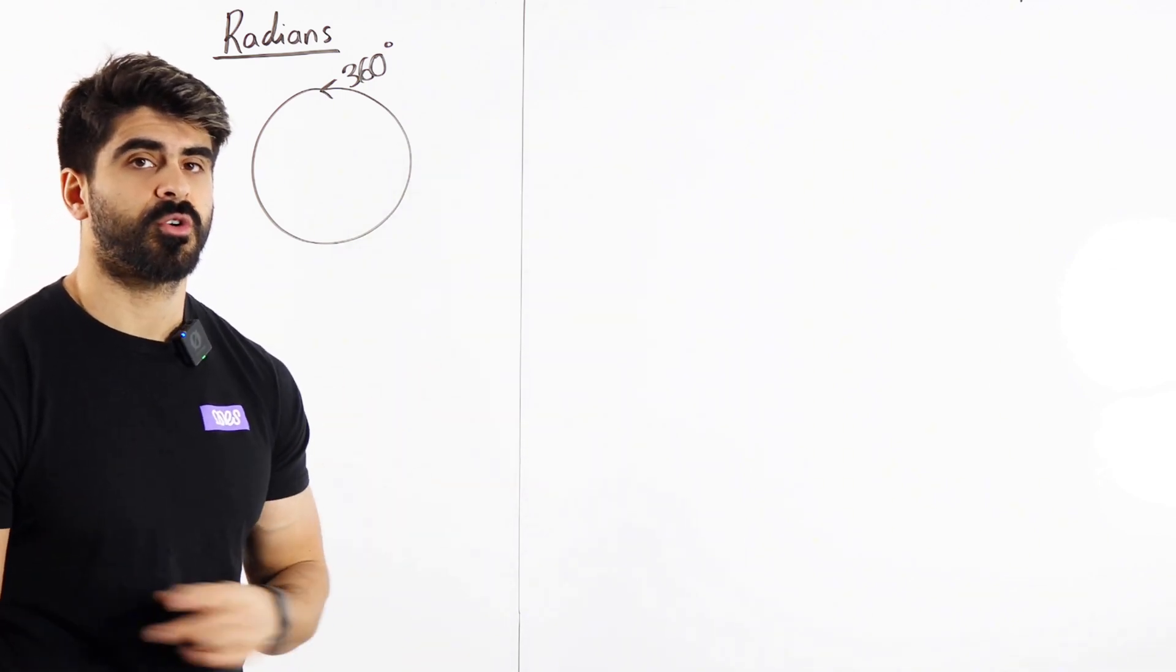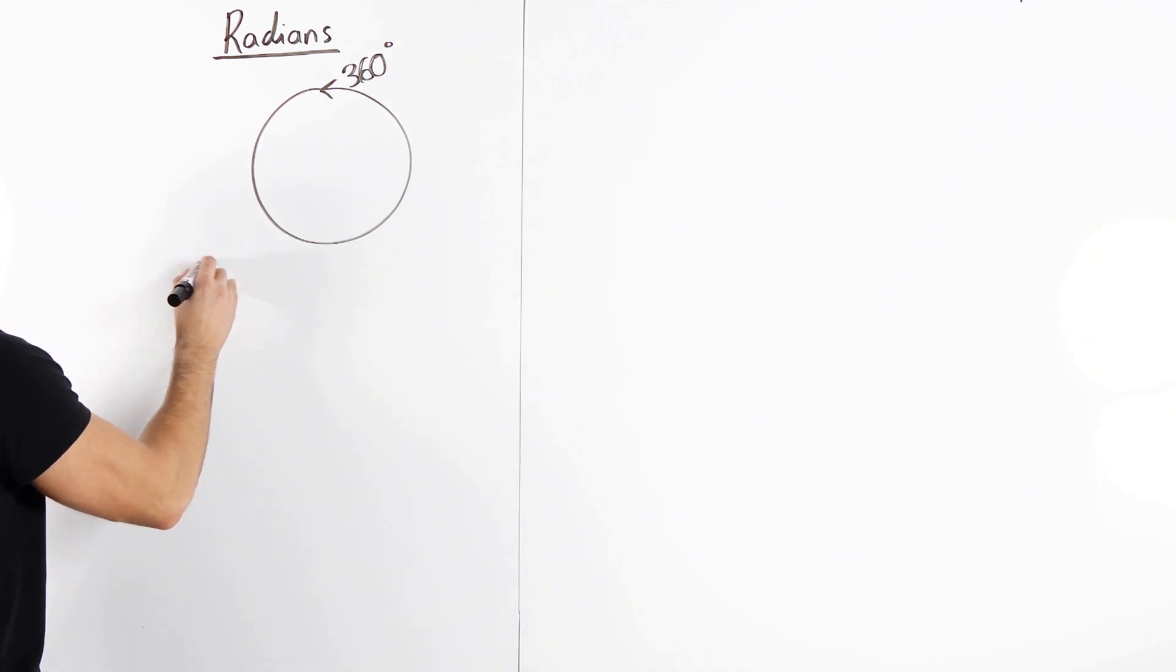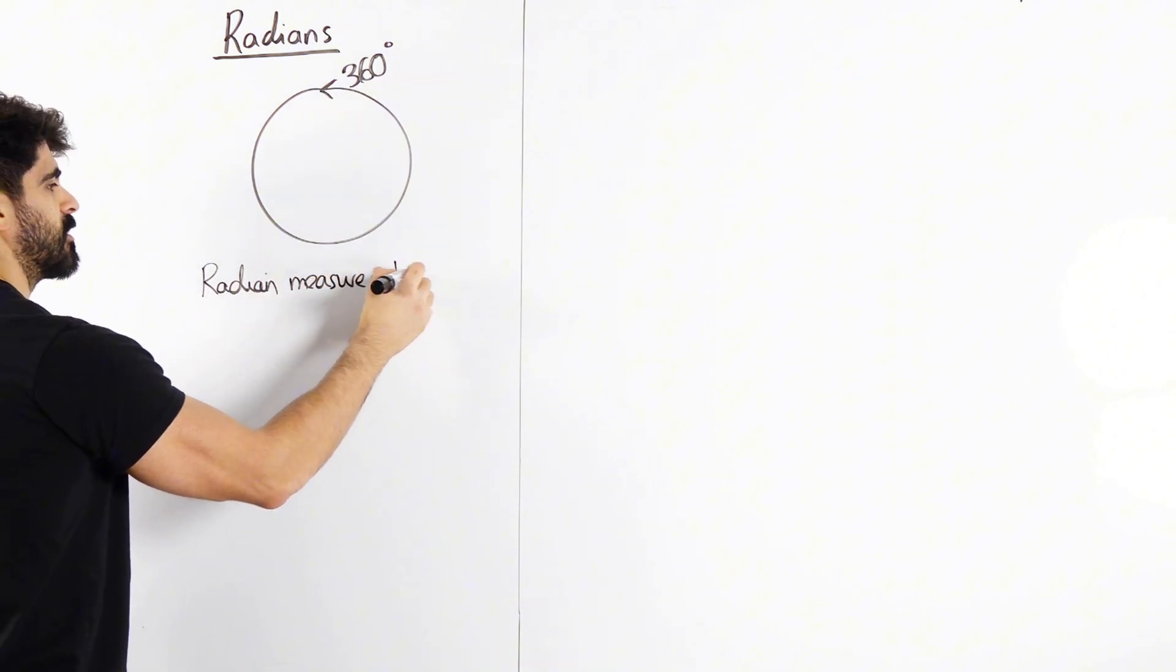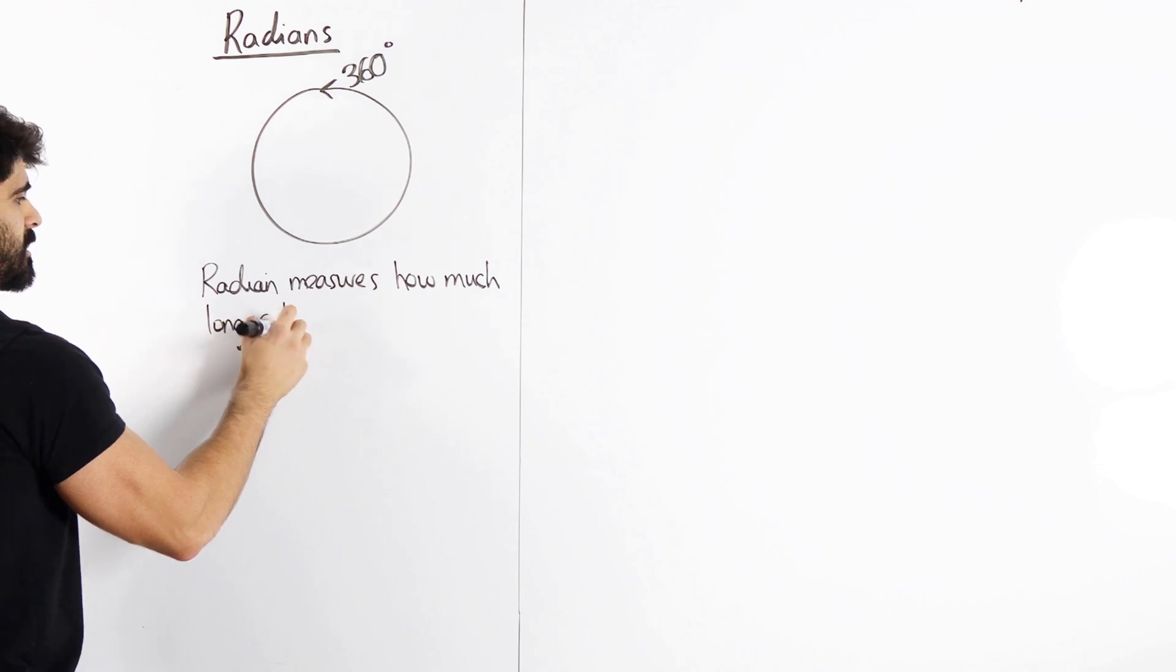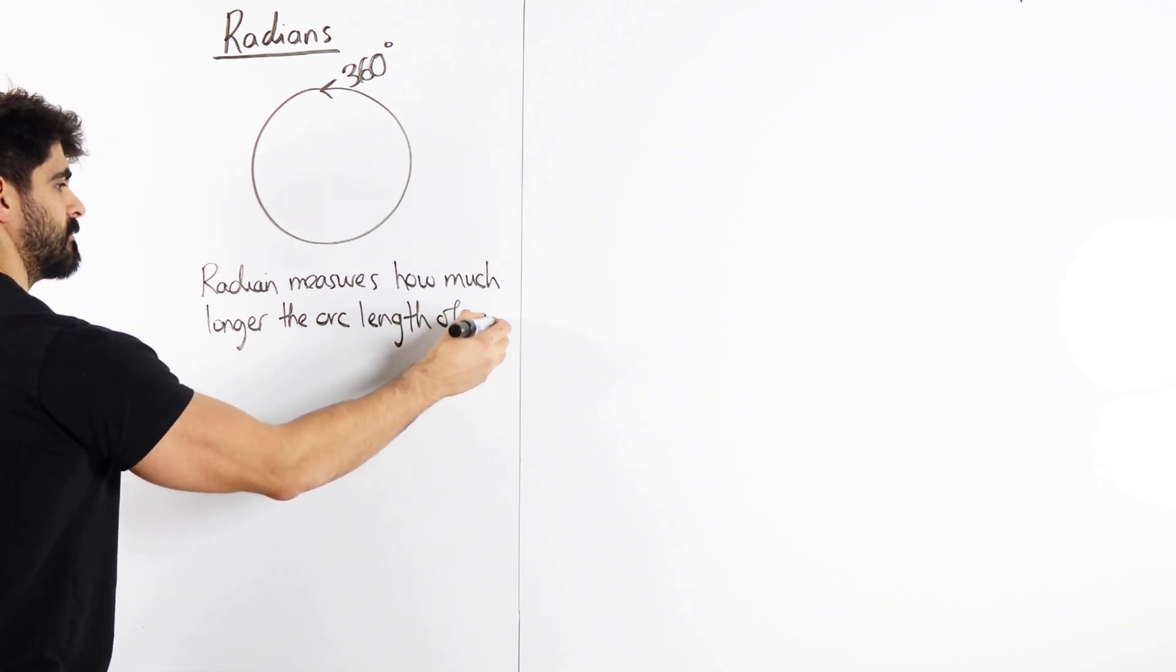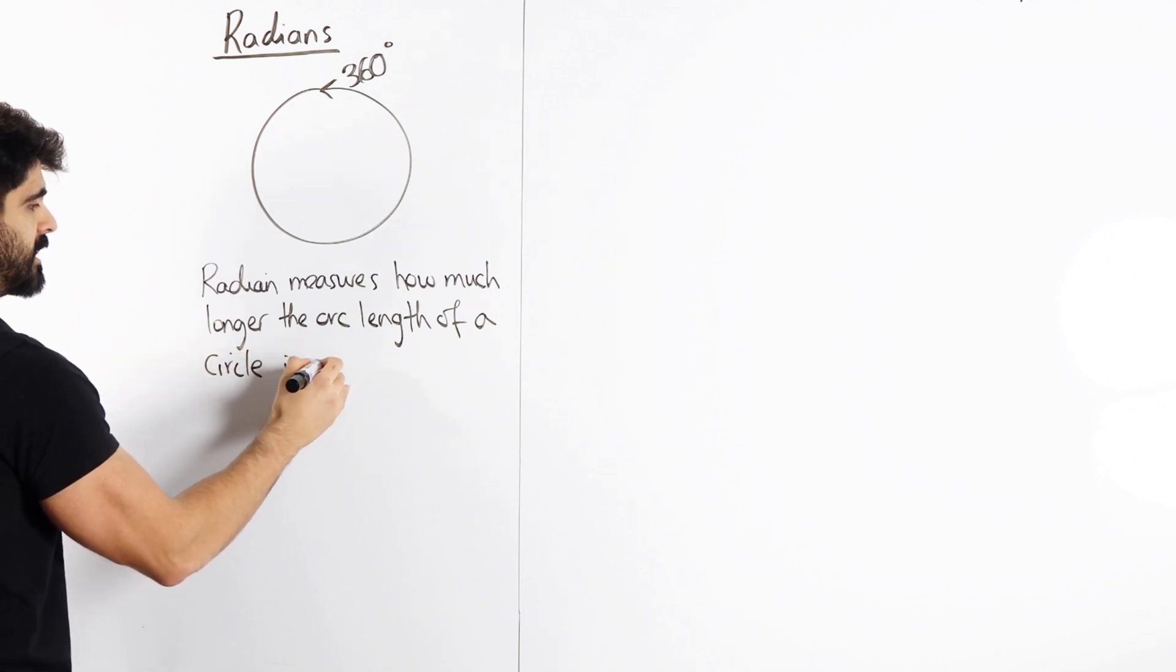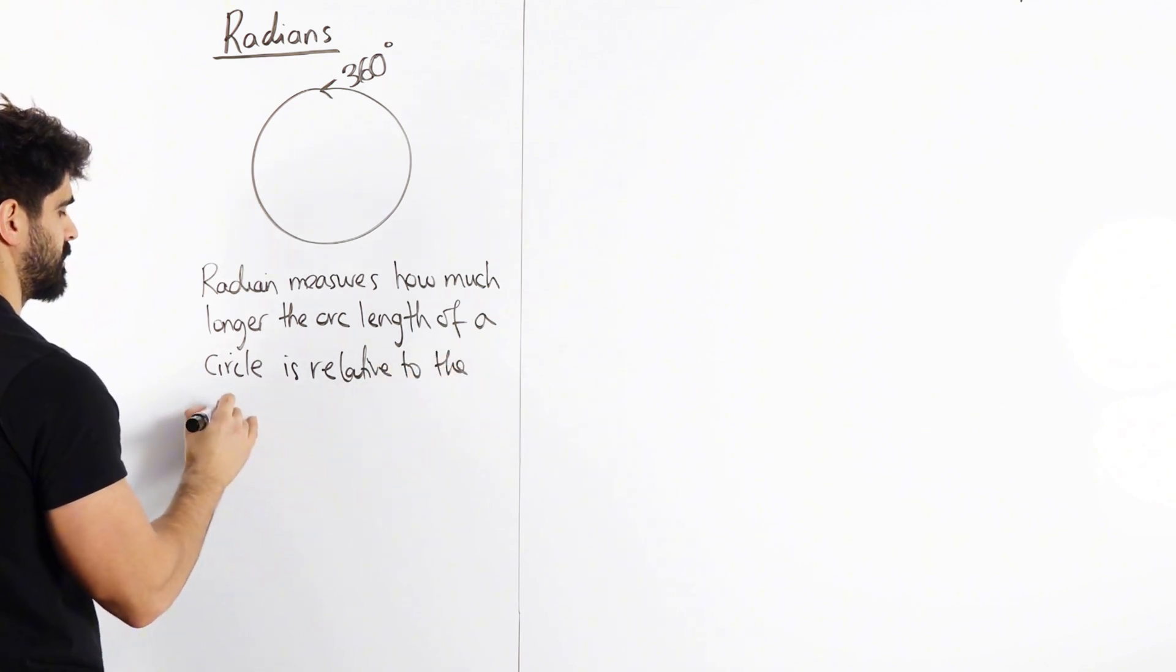However, radians, not quite the case. A radian just measures, so radian measures how much longer the arc length of a circle is relative to the radius.